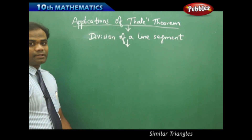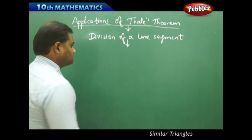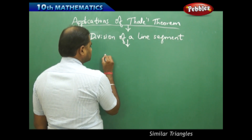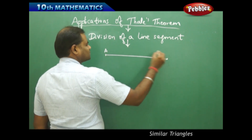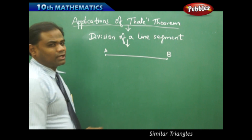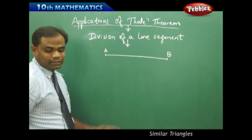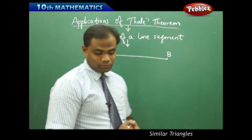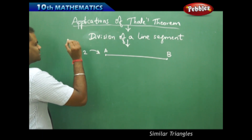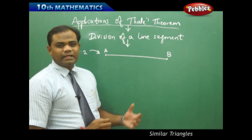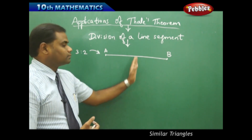Division of a line segment in the desired ratio. Initially, let me consider the line segment AB. AB is the line segment which I want to divide in the ratio 3:2. So let's see how I divide this line segment in the ratio 3:2 — that is 3 parts and 2 parts separated on the line segment.